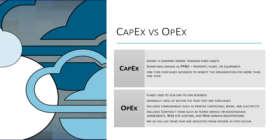Essentially, items covered by CAPEX are physical goods or services that are usually one-time purchases and are intended to benefit the company for a year or more.